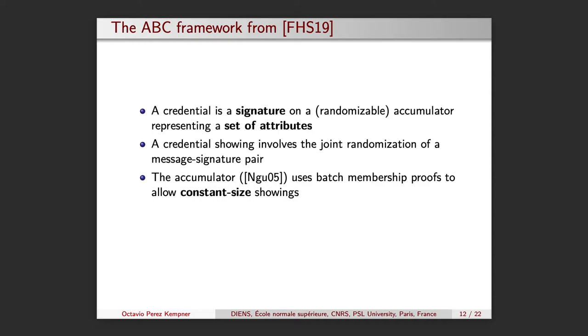In this work, we will be referring to the credential accumulator as a set commitment scheme, which was the original name given in the previous work. Although one can have constant size showings because of the batch membership proofs, the main drawback of this primitive is that expressiveness is limited. Only a selective disclosure of attributes is supported. For users to prove that they do not have a particular attribute, they would need to encode the negation of it as an attribute. While doing so would work, it is far from being efficient and other alternatives are preferred.